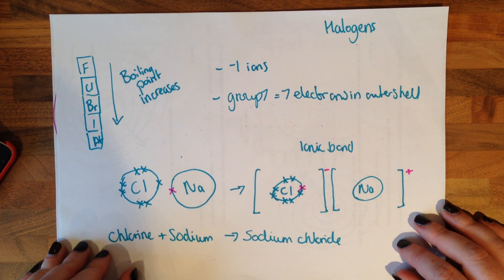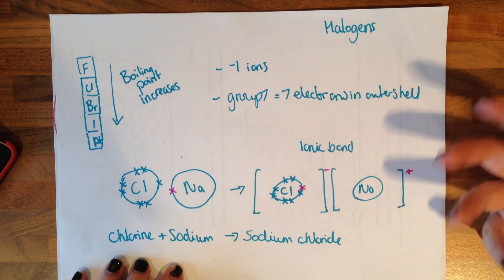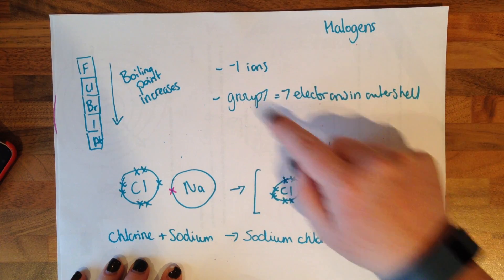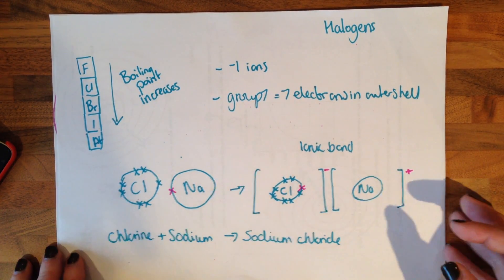Halogens, the other group you need to know about, they have seven electrons in the outer shell. So they're going to gain an electron. When they react, they form minus one ions. They form ionic bonds with things in group one.